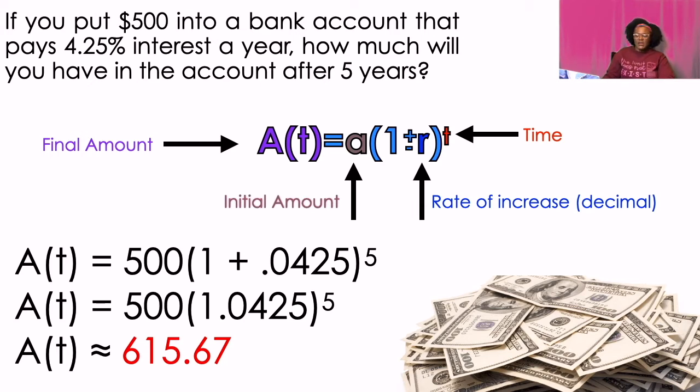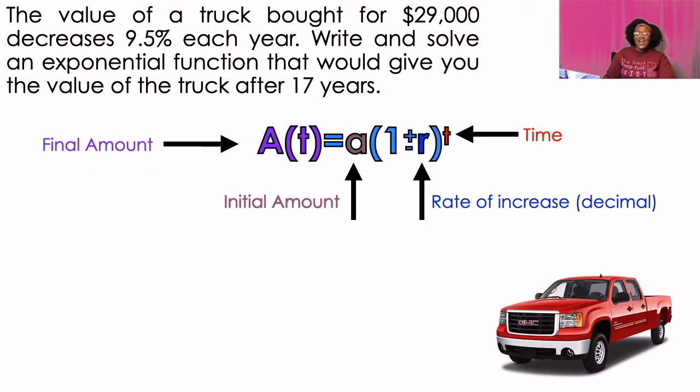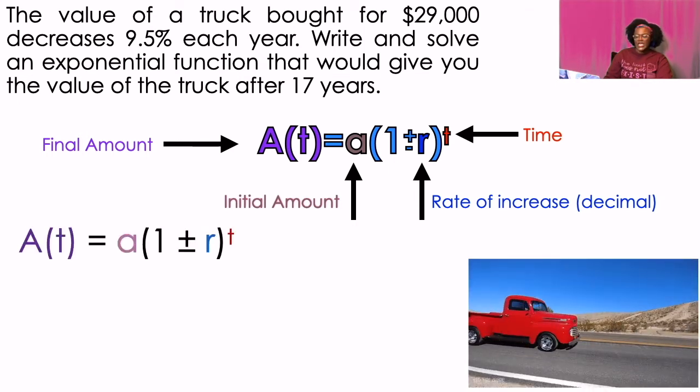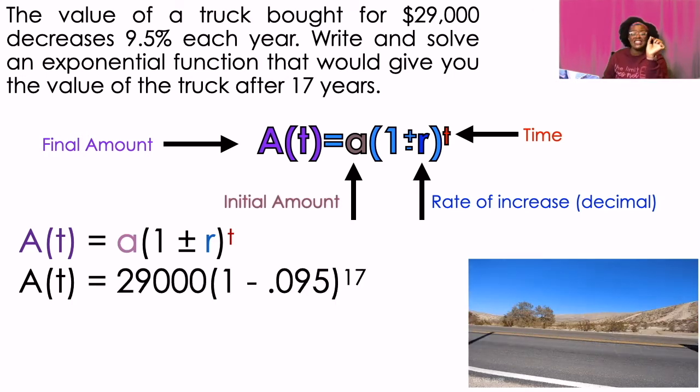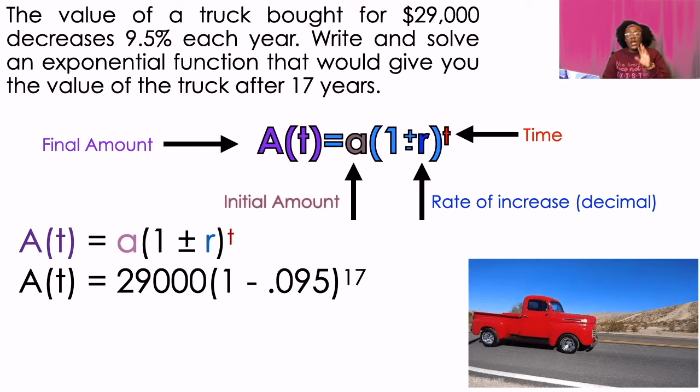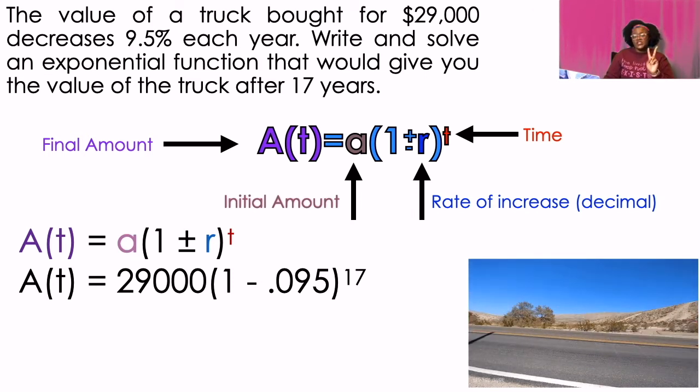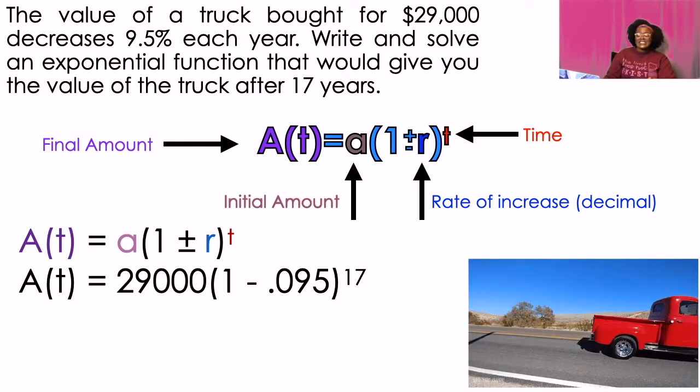Let's go on to the next example. We're almost done here. I think we have three examples left. The value of a truck bought for $29,000 decreases at 9.5% each year, write and solve an exponential function that would give you the value of the truck after 17 years. So the initial amount is 29,000. I'm using the minus sign in this problem. That's important because it says the value of the truck decreases at 9.5% each year. So to change that percentage into a decimal, I'm going to go ahead and move the decimal space over two spaces to the left. So I'm going to get 0.095 and we're going to put 17 in the place of T because it told me 17 years.